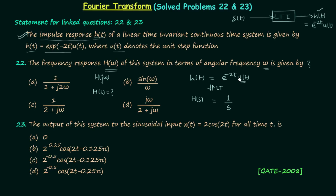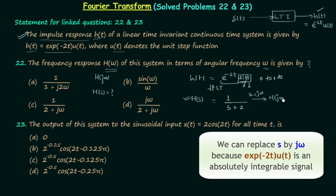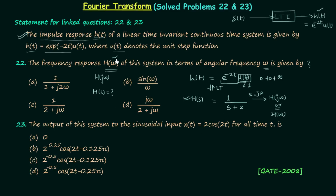Taking the Laplace transform of h(t) gives us the transfer function H(s). The Laplace transform of 1 is 1/s, and u(t) has value 1 from 0 to +∞. Since we have e^(-2t) multiplied to 1, using the shifting property of the Laplace transform we get H(s) = 1/(s+2). Now replacing s by jω gives us H(jω) = 1/(jω + 2), so option C is the correct answer for the first question.